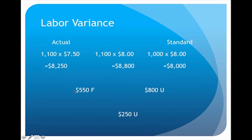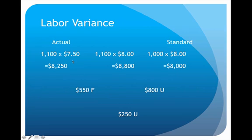We now have two variances and a total variance. Between the actual point and the midpoint — eight thousand two fifty versus eight thousand eight hundred — is a difference of five hundred fifty dollars, and that variance is favorable. Between the midpoint and the standard — eight thousand eight hundred versus eight thousand — is an eight hundred dollar variance, which is unfavorable because that point is higher than the standard. The overall total variance is two hundred fifty dollars unfavorable. We weren't efficient — we should have finished in a thousand hours but worked eleven hundred. Efficiency was unfavorable by eight hundred dollars. But in terms of rate, we paid fifty cents less per hour, saving us five fifty, leaving us two hundred fifty dollars unfavorable overall.